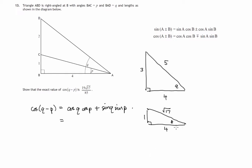We're now ready to find the sines and cosines of P and Q. Cosine of Q is adjacent over hypotenuse: four over five. Cosine of P is adjacent over hypotenuse: four over √17. Sine of Q is opposite over hypotenuse: three fifths. Sine of P is opposite over hypotenuse: one over √17.